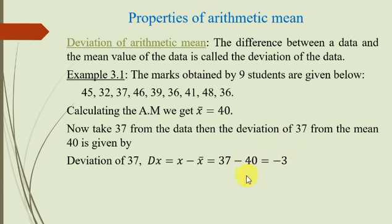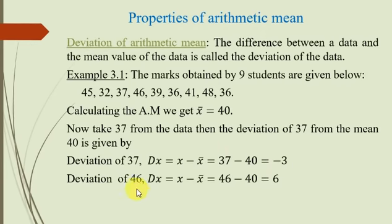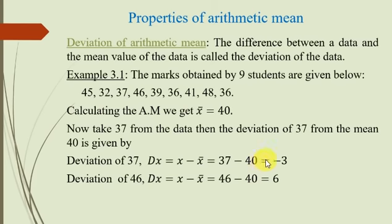37 minus 40 = minus 3. تو اس کا مطلب یہ ہوا کہ 37 کا arithmetic mean سے deviation minus 3 ہے — negative 3 means it is in the negative direction، یعنی 40 سے 3 units less ہے۔ Similarly اگر ہم 46 لیتے ہیں: dx = 46 minus 40 = plus 6، positive 6۔ یہ اصل میں mean سے 6 units بڑا ہے۔ This is called the deviation from arithmetic mean.